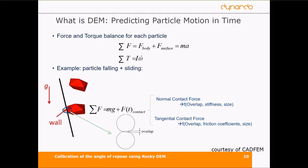Rocky calculates the sum of forces and torques for each particle, and this sum is sensitive to noise. Where does this noise come from? Looking at the example of particles falling and sliding, when a particle hits the wall we have a little overlap, and this overlap is the cause of our noise. We have to take this into consideration when we think about DEM simulations.